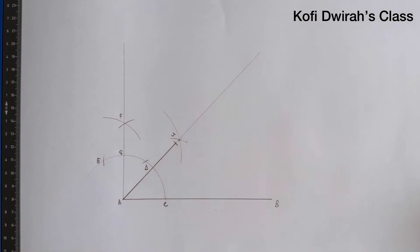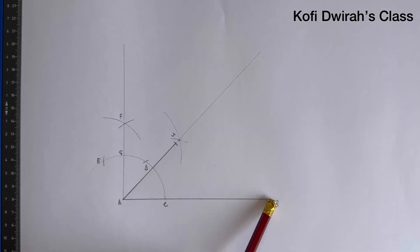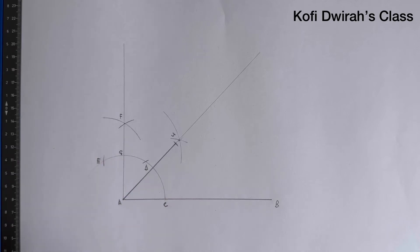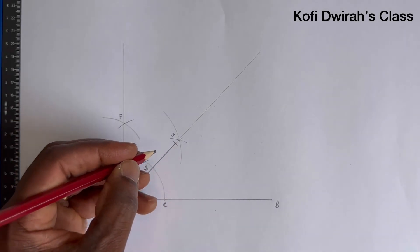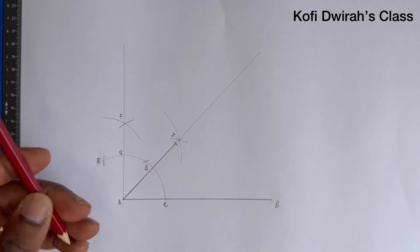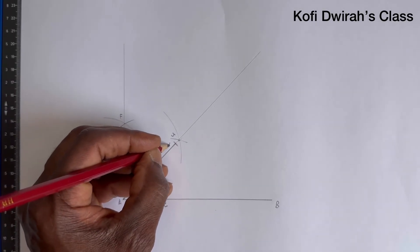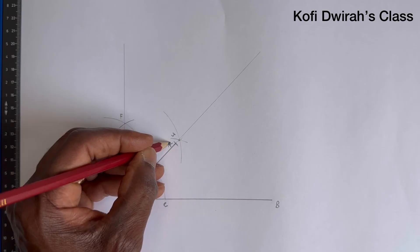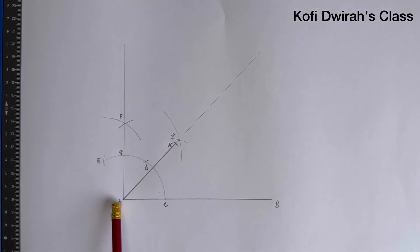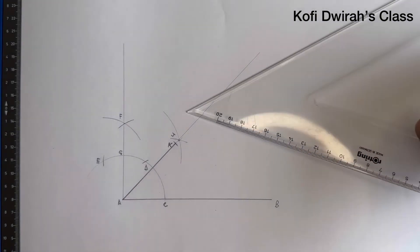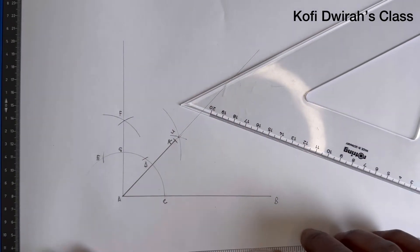Now we are going to transfer this angle to point B, because line AB is 120. Let's consider this end to be point K. So line AK — we are going to transfer line AK to this end. With your set square or your ruler you do the transfer.